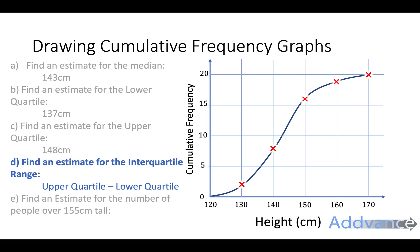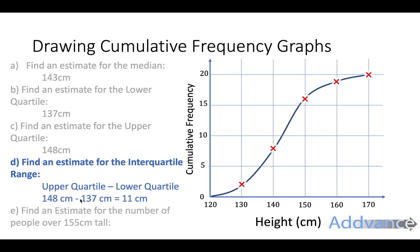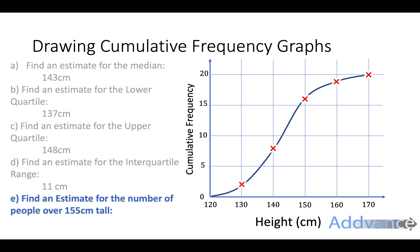Now we're going to find the interquartile range. To find the interquartile range, you do the upper quartile subtract the lower quartile. The upper quartile is 148 and the lower quartile is 137. Subtracting them gives 11 centimetres — so the interquartile range is 11 centimetres.